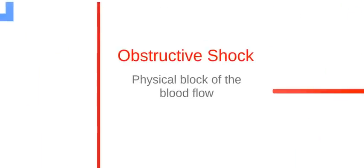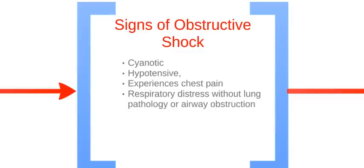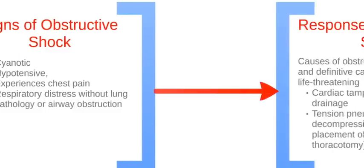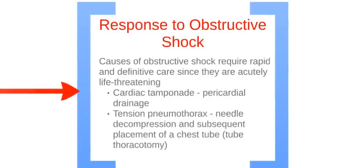Obstructive shock occurs if there is a physical block of blood flow. The signs include cyanosis, hypertension, chest pain, and respiratory distress without lung pathology or airway obstruction. The cause requires rapid and definitive care because these are life-threatening conditions. Cardiac tamponade requires pericardial drainage, while tension pneumothorax requires needle decompression and subsequent placement of a chest tube.